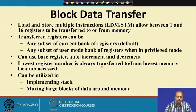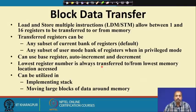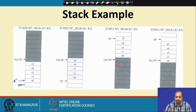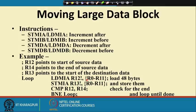Next we look at block data transfer — load multiple and store multiple instructions, LDM and STM. They are variants of the block move instruction found in 8086-type processors. You can transfer between 1 and 16 registers to or from memory. For example, LDMIA with R12 pointing to a source block will transfer 48 bytes, loading them into registers R0 to R11.